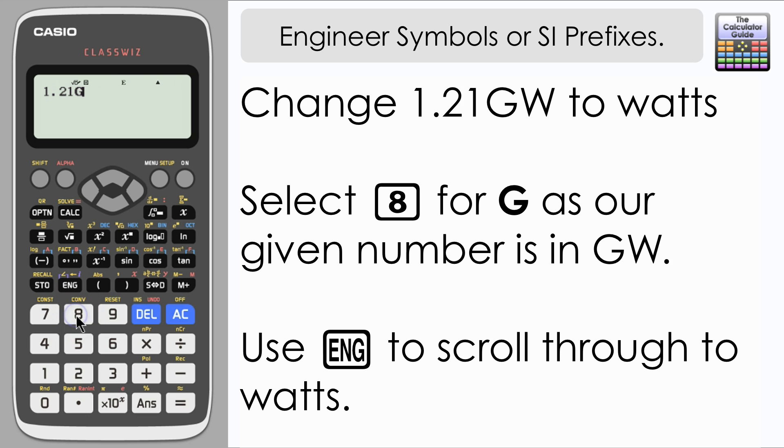Now if I press equals, in the first instance I'm just going to get my answer repeated, because we are in engineer symbol mode. Remember, we changed that option 4 in setup.